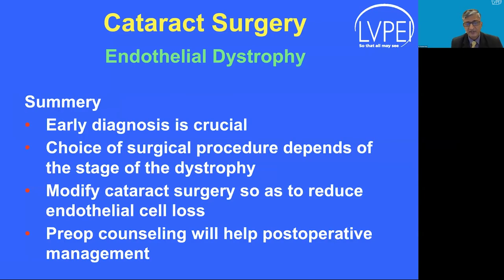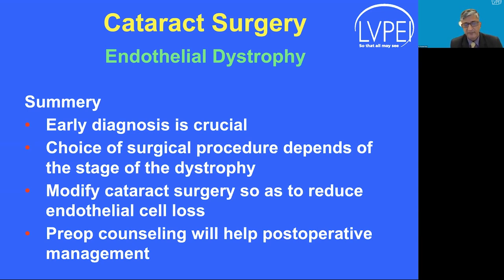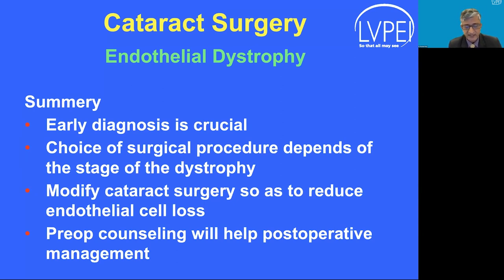In summary: early diagnosis is crucial, and a good clinical examination plays a key role. The choice of surgical procedure depends on the stage of dystrophy and density of cataract. Consider modifying cataract surgery to reduce endothelial cell loss. Good preoperative counseling and good postoperative management of these cases are essential. Thank you very much.